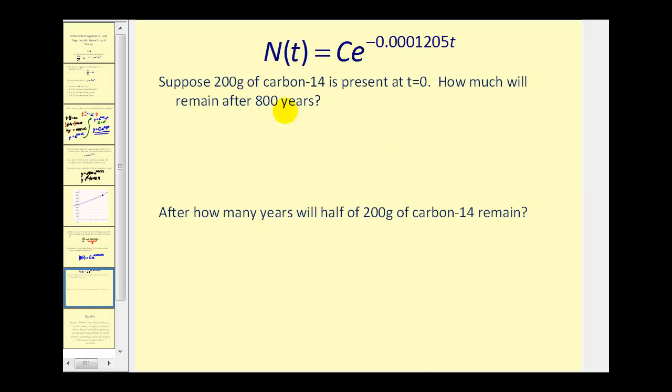Suppose 200 grams of carbon-14 is present at time equals zero. How much remains after 800 years? Well, it's quite straightforward now. C would equal 200 and t would equal 800. And we can go straight to the calculator.